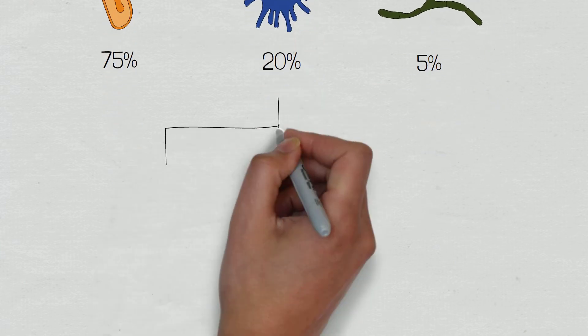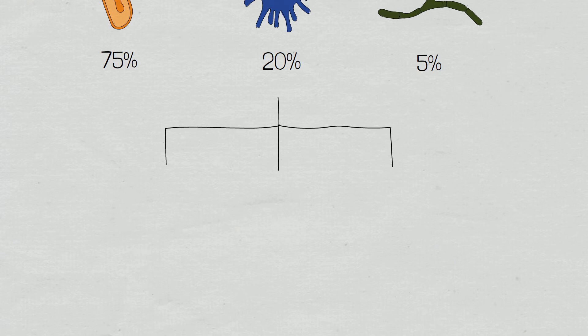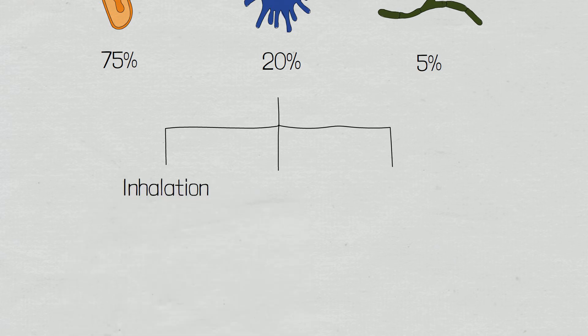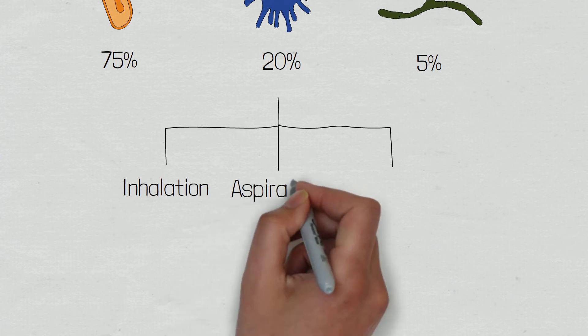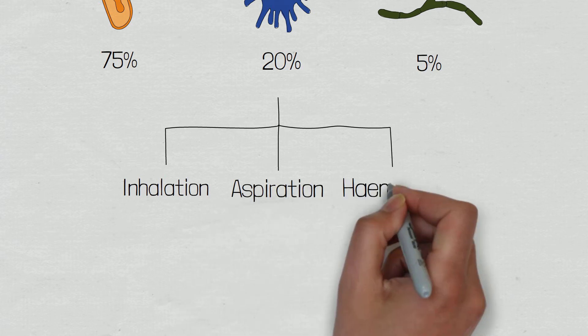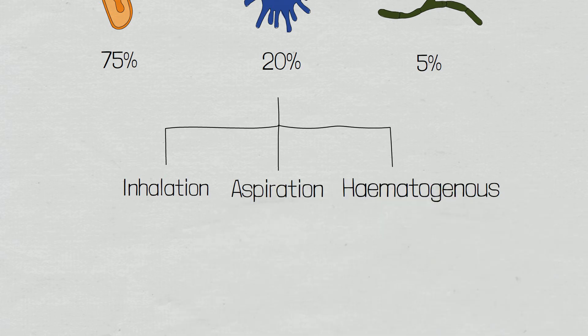Pathogens can enter the alveoli by different routes. These routes include inhalation, aspiration, and through the haematogenous route, although this is rare and mainly seen in those who use intravenous drugs.